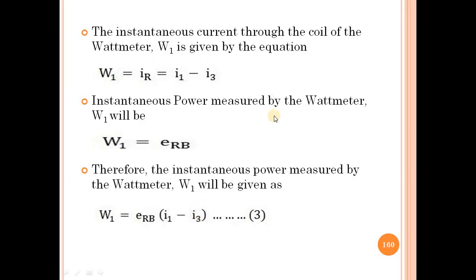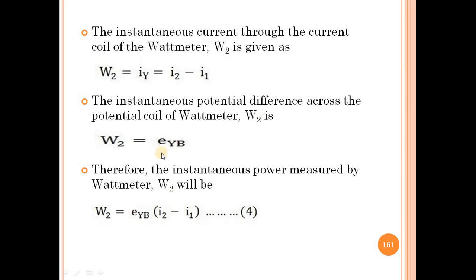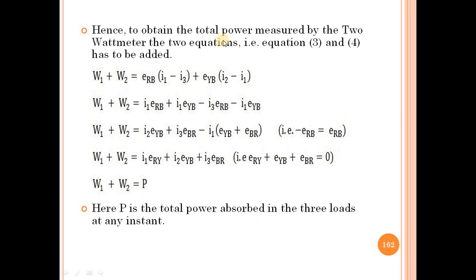Therefore the instantaneous power measured by watt meter W2 is: W2 = e_YB × (i2 − i1). So we now have equations for W1 and W2. To obtain the total power measured by both watt meters, we add equation 3 and equation 4: W1 + W2 = e_RB(i1 − i3) + e_YB(i2 − i1).